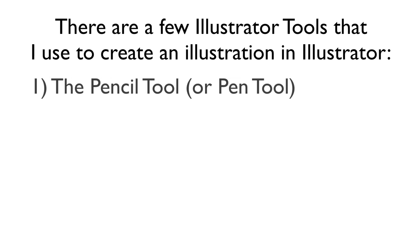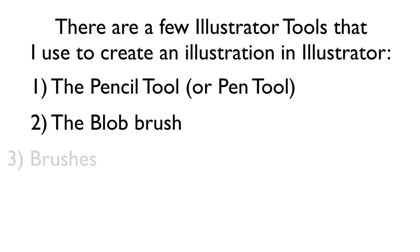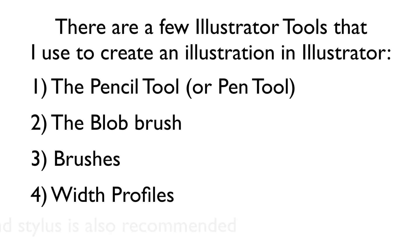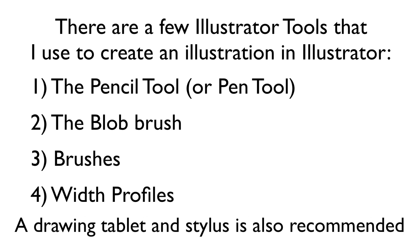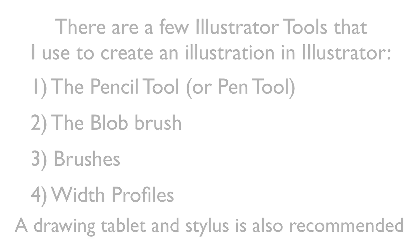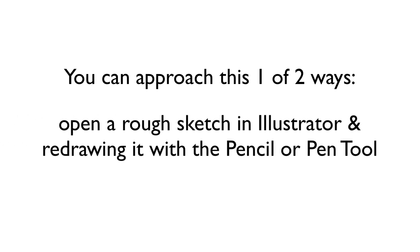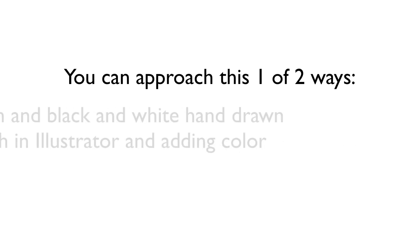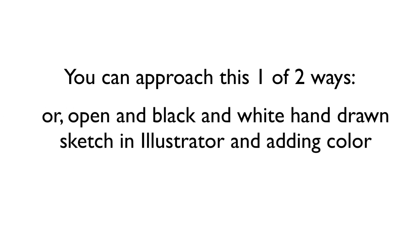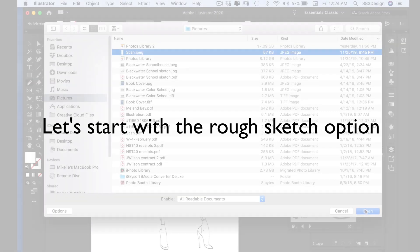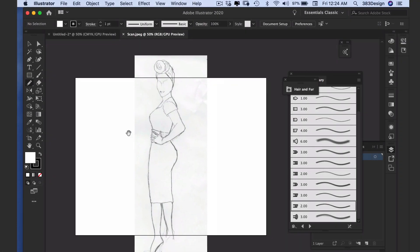There are a few Illustrator tools I use for this process: the pencil tool and sometimes the pen tool, the blob brush, brushes, and width profiles. Some type of drawing tablet with a stylus is also highly recommended — it will make a lot of the tracing much easier. You can approach this one of two ways: bringing in a rough sketch and redrawing it, or bringing a black and white hand-drawn sketch into Illustrator and just adding color to that.